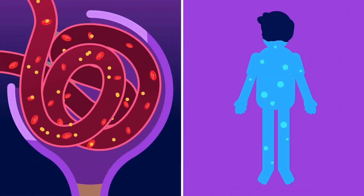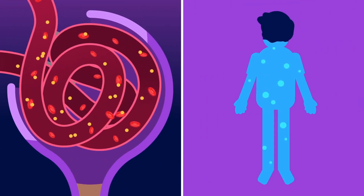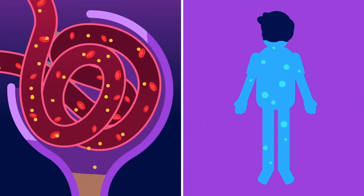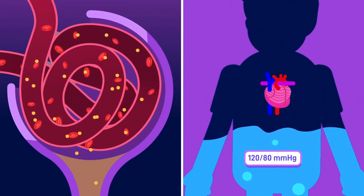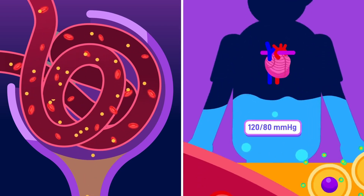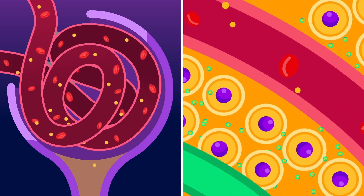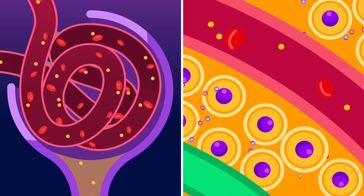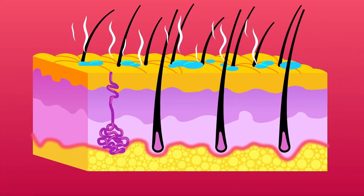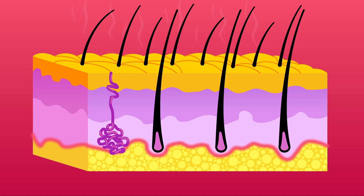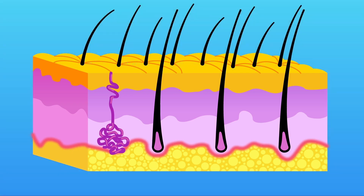Number four, the kidneys regulate our fluid balance by adjusting urine production to prevent dehydration and keep a normal blood pressure level. Additionally, it eliminates most of the metabolic waste to prevent it from accumulating in the body. Number five, the skin releases sweat that evaporates to absorb heat from the body, thereby regulating our temperature while also removing excessive salt.